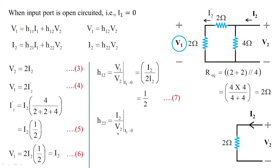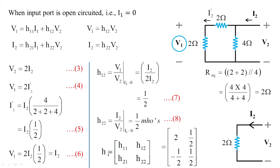h22 = i2/v2 when the input port is open-circuited. Its value is 1/2 siemens (mhos). Now having h11 = 2 Ω, h21 = −1/2, h12 = 1/2, and h22 = 1/2 S, the complete h-parameter matrix is obtained as [2, 1/2; −1/2, 1/2].